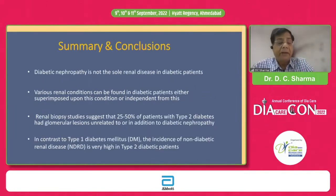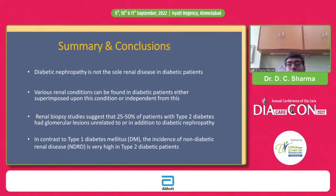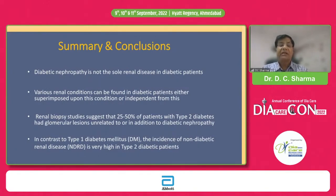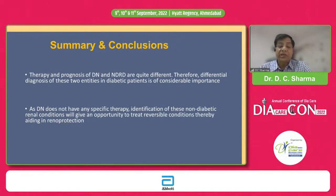Dear friends, diabetic nephropathy is not the sole renal disease in diabetic patients. Various renal conditions can be found, either superimposed upon diabetic nephropathy or independent of diabetes-related causes. Renal biopsy studies suggest that 25 to 50 percent of type 2 patients had glomerular lesions unrelated to or in addition to diabetic nephropathy. In contrast to type 1 diabetes, the incidence of non-diabetic renal disease is very high in type 2. The therapy and prognosis of diabetic nephropathy and non-diabetic renal disease are quite different, making differential diagnosis of considerable importance. Identifying these non-diabetic conditions provides an opportunity to treat reversible conditions, thereby helping renal protection and improving outcomes.